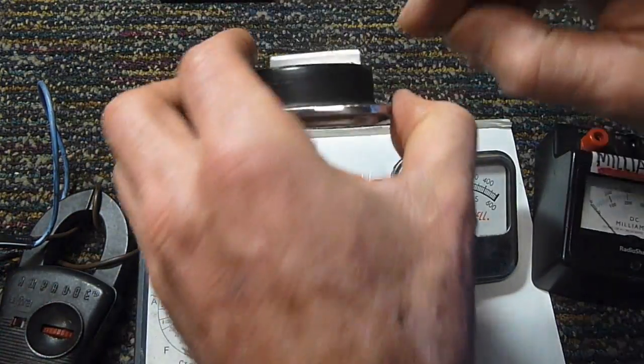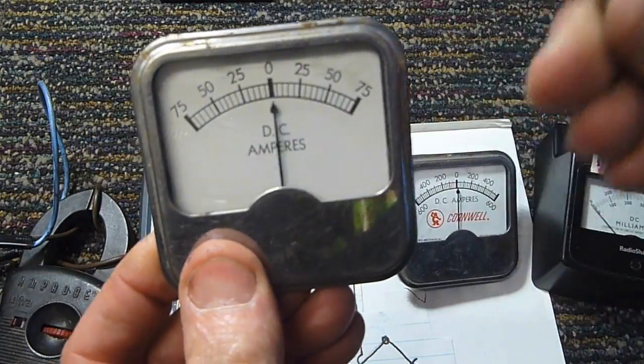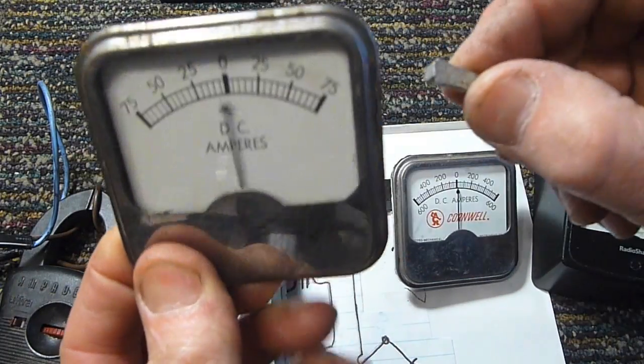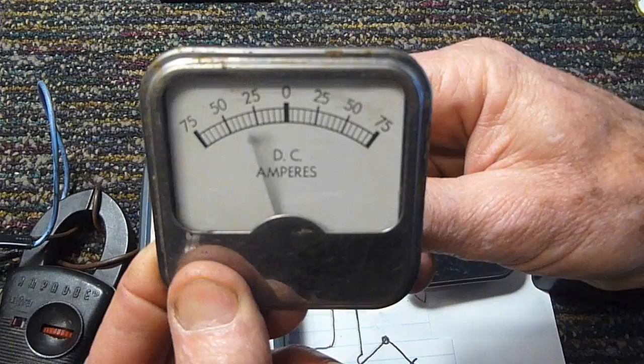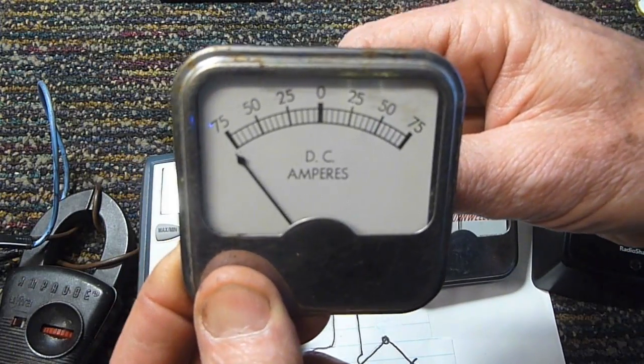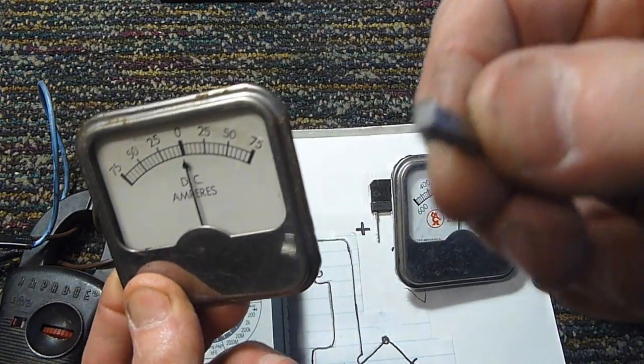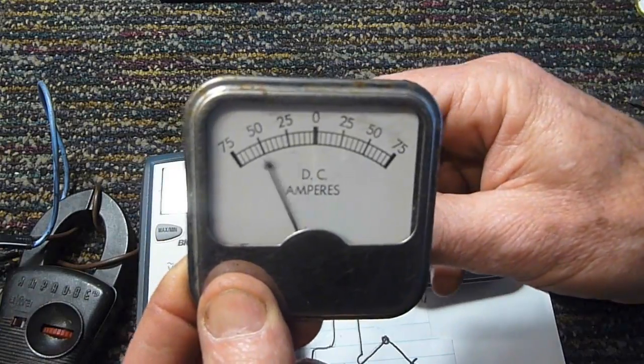Now what's kind of neat about these meters here is they actually measure the magnetic field strength. So for example, if I take this little magnet here, put it on the back of the channel, you can see this thing goes crazy. So I suppose if you wanted to measure the strength of your magnets, you could use it in that way as well.